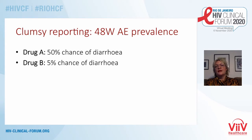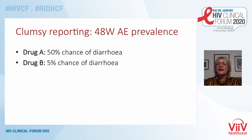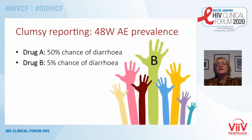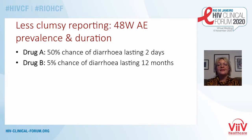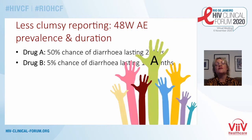By clumsy reporting, I mean just reporting the prevalence of side effects at week 48. Let's take an example: if I said to you, do you want drug A with a 50% chance of diarrhoea or drug B with a 5% chance? Most of you would opt for drug B. But now let's think about duration — drug A's diarrhoea only lasts two days, whereas drug B's 5% risk, if you get it, lasts a whole year. Most of you would now opt for A. That's why graphs like the STRIBILD studies are so important — we can counsel people more accurately about how long an adverse event is likely to last.